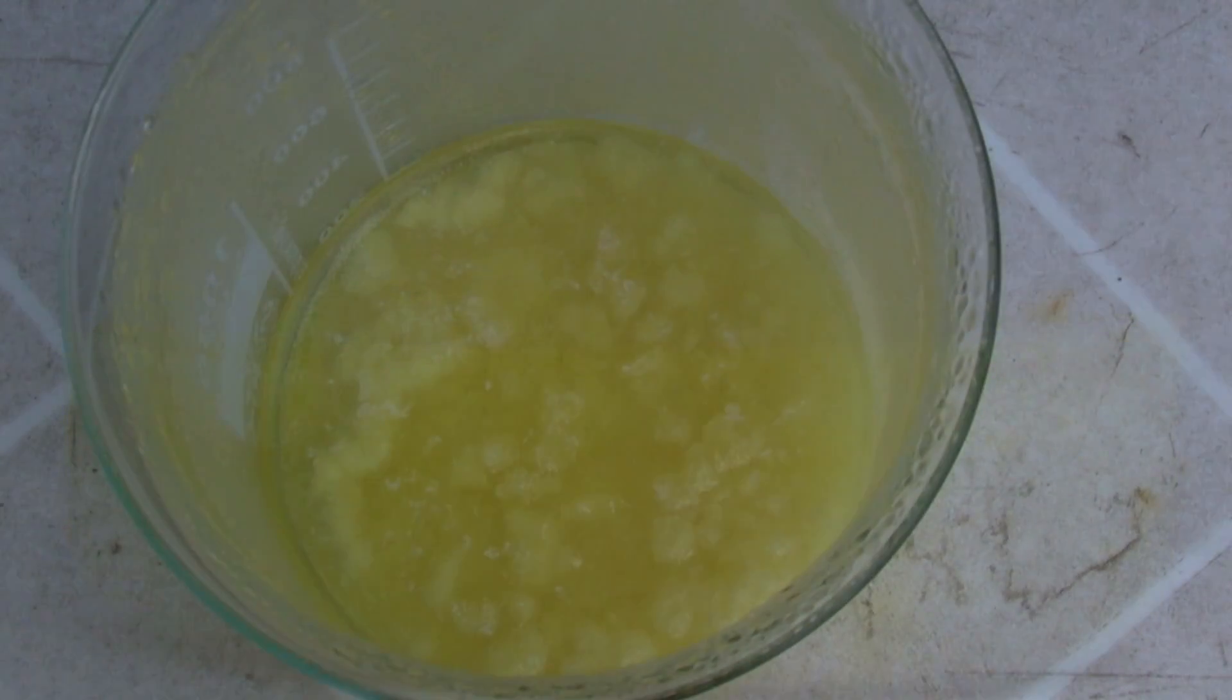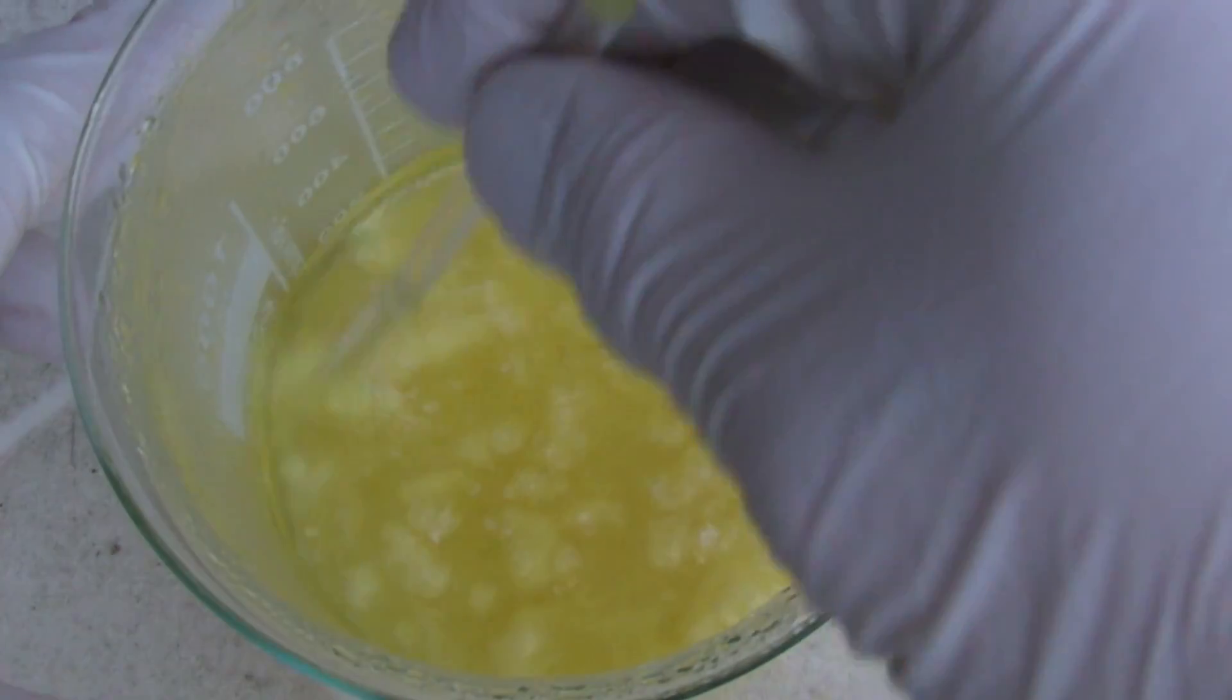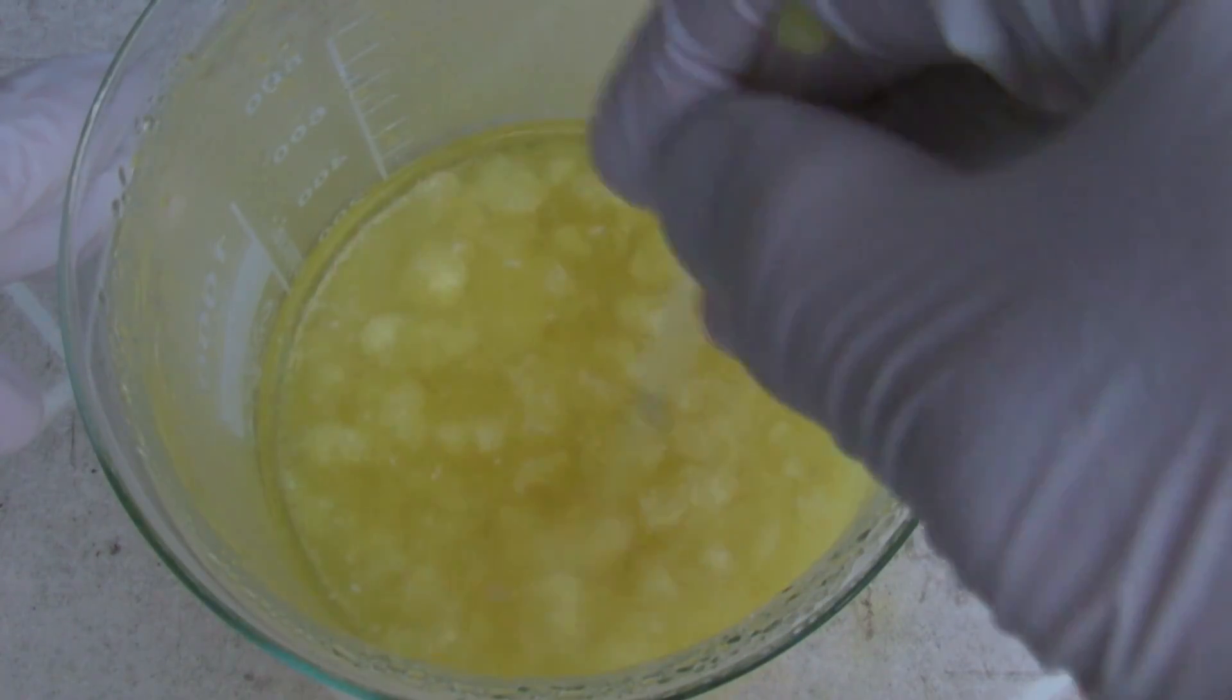After that, the 3,5-dinitro salicylic acid started to crystallize, so it would be easier just to recrystallize the raw product directly from distilled water. Then the crystals can be loosened carefully, while it is taken care of that the side products stay on the bottom.